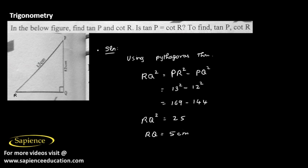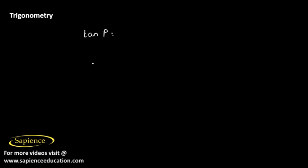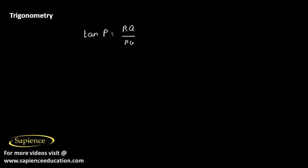Now let us move on to finding the value of tanP and cotR. tanP - tanTheta is the opposite side divided by adjacent side, so for the angle P, opposite side is RQ divided by adjacent side PQ, and RQ is 5 and PQ is 12.